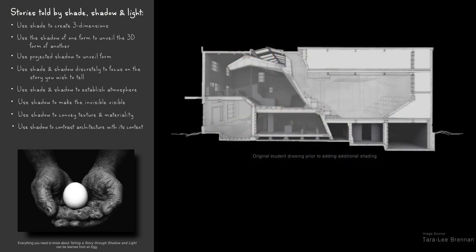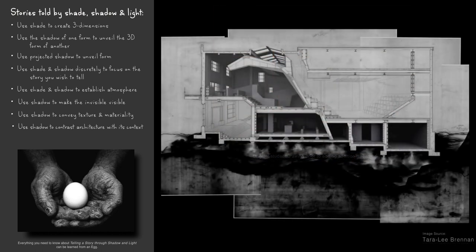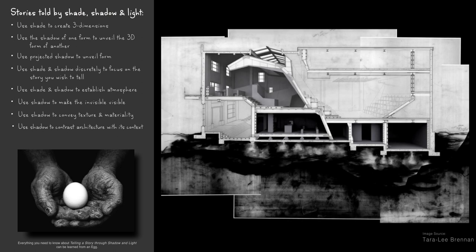In this drawing by student Tarly Brennan, the context is highly shaded rather than the architecture. The soft interior shading of the upper level leads our eye downward through the architecture to the earth below.